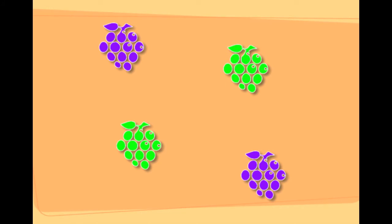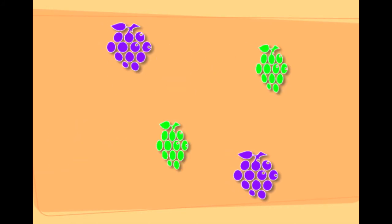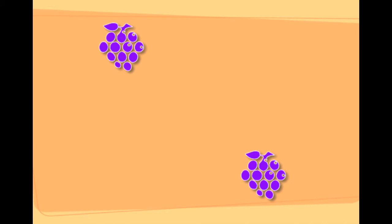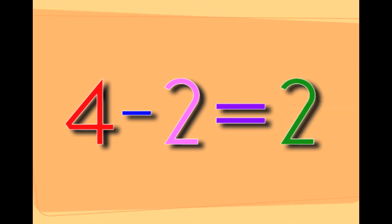These are four bunches of grapes. Taking two bunches of grapes away from the four bunches of grapes will leave you with two bunches. Four minus two equals two.